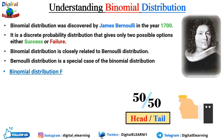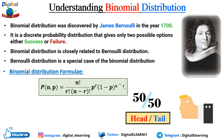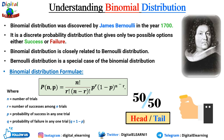Let us look at the binomial distribution formula: P(r) = n! / (r! × (n−r)!) × p^r × (1−p)^(n−r). Here, n represents the number of trials, r represents the number of successes among n trials, p is the probability of success in one trial, and q is the probability of failure, where q = 1 − p. We will see how to apply this formula in the examples.